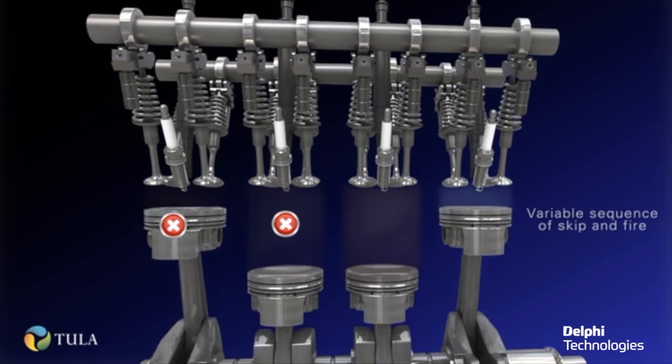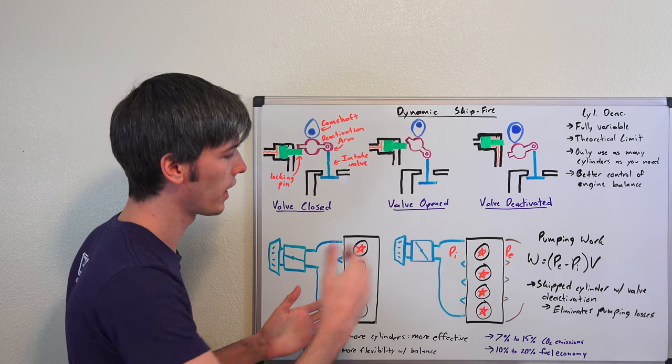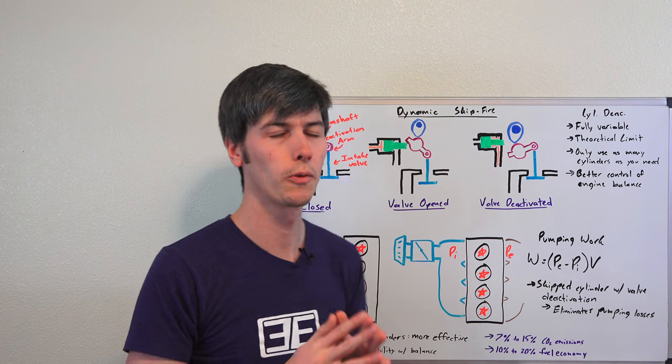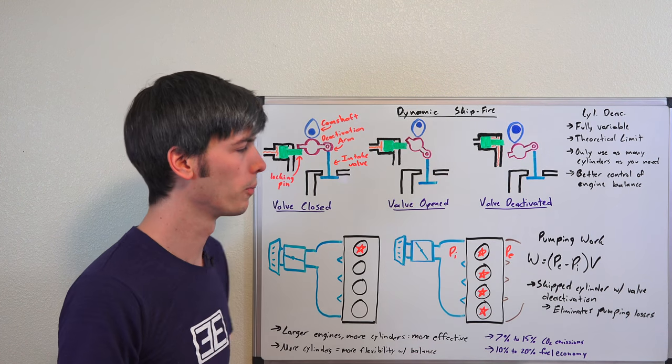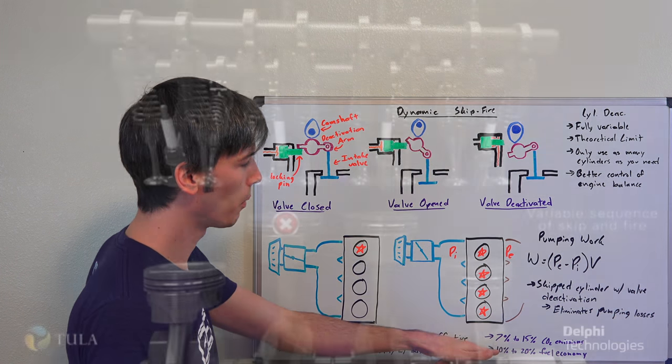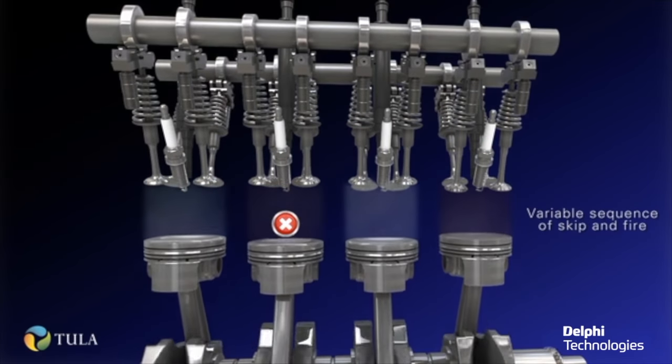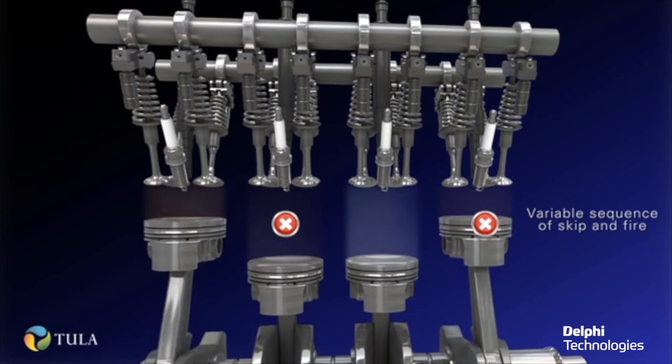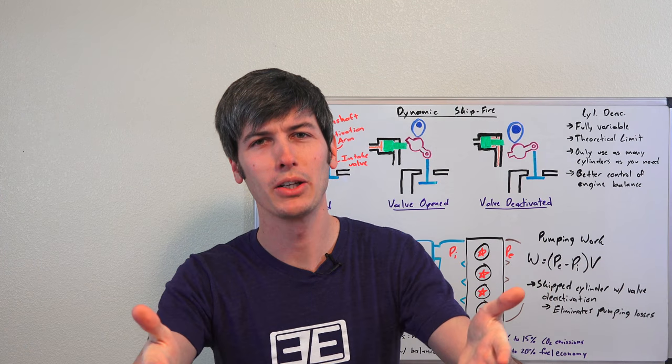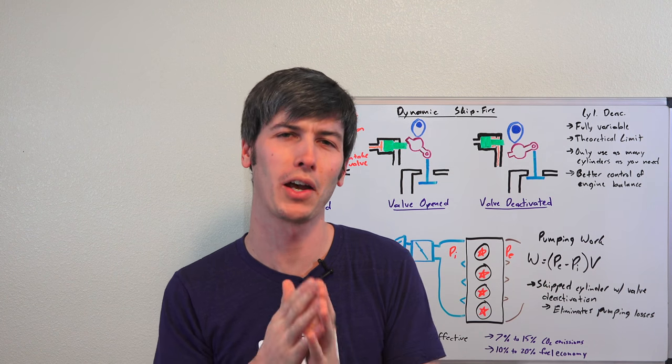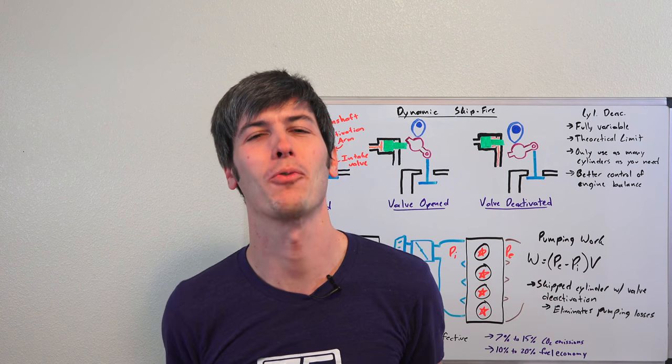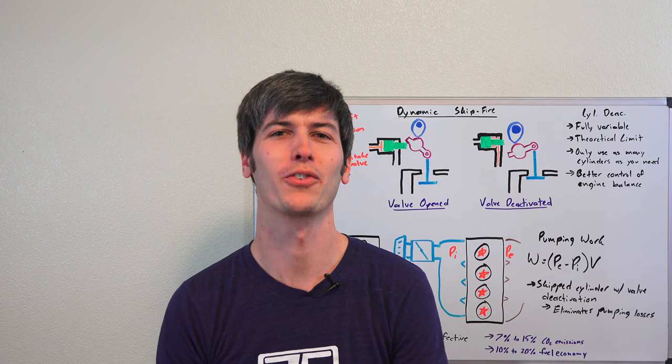Now what does this mean for fuel economy and for emissions? Well, Delphi is saying that you can expect 7 to 15% reduction in CO2 emissions, and a 10 to 20% improvement in fuel economy, and this number will be larger depending on the size of the engine. Smaller 4 cylinder engines aren't going to see as much of an improvement as bigger V8s, V12s, things like that. So now that you all understand how it works, you can let me know in the comments, that because it's complicated, it will fail, it's unreliable, it's a dumb idea, all those kinds of things. Thank you so much for watching, if you have any questions or comments, feel free to leave them below.